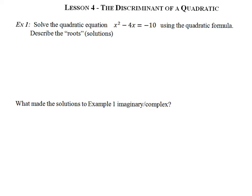Let's begin with exercise number 1, where we want to solve the equation x squared minus 4x equals negative 10 using the quadratic formula. I'm going to first put this in standard form: x squared minus 4x plus 10 equals 0. From this equation, a is equal to 1, b is equal to negative 4, and c is equal to 10.